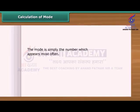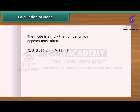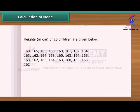The mode is simply the number which appears most often. See this example. We have a few numbers here. How can we find out the mode? To find the mode, we need to first put the numbers in order, then count how many of each number. Now see which numbers appear most often. In this case, 8 appears 2 times, so the mode is 8. Look at this data — it shows the height of 25 children in a class. Let us find out the mode of their heights.